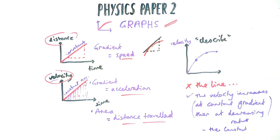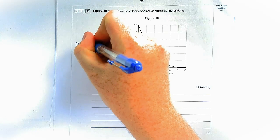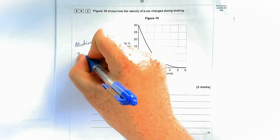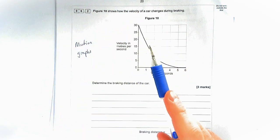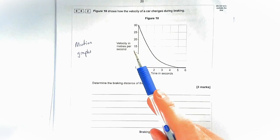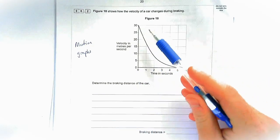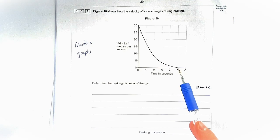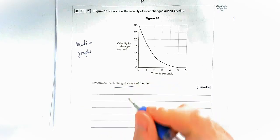Let's have a look at some of the trickier questions you could be asked about graphs in Paper 2. It's very common for motion graphs such as velocity-time graphs and distance-time graphs to come up in one way, shape or form. This question has a velocity-time graph of a car starting at 30 that gradually decreases over a period of time. The question asks us to work out the braking distance of the car.